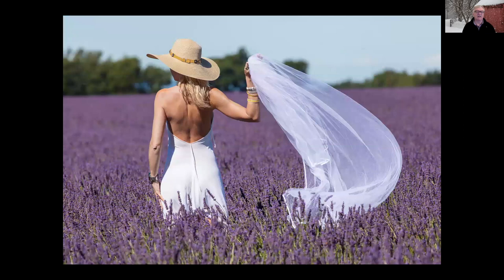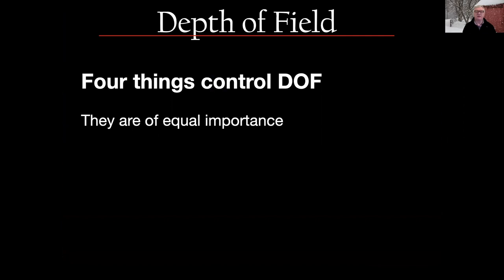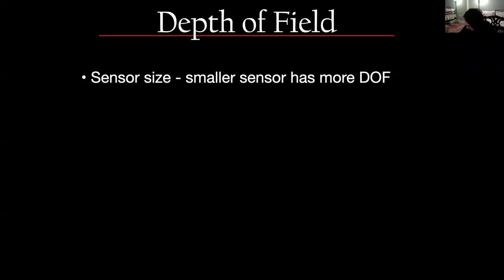There are four things that equally control depth of field, though some override others depending on what you're shooting. First, sensor size makes a difference — the smaller the sensor, the more depth of field you have. A crop sensor has more depth of field than a full frame sensor. The extreme example is your iPhone, which has a very small sensor and lots of depth of field, which is why everything tends to be in focus.